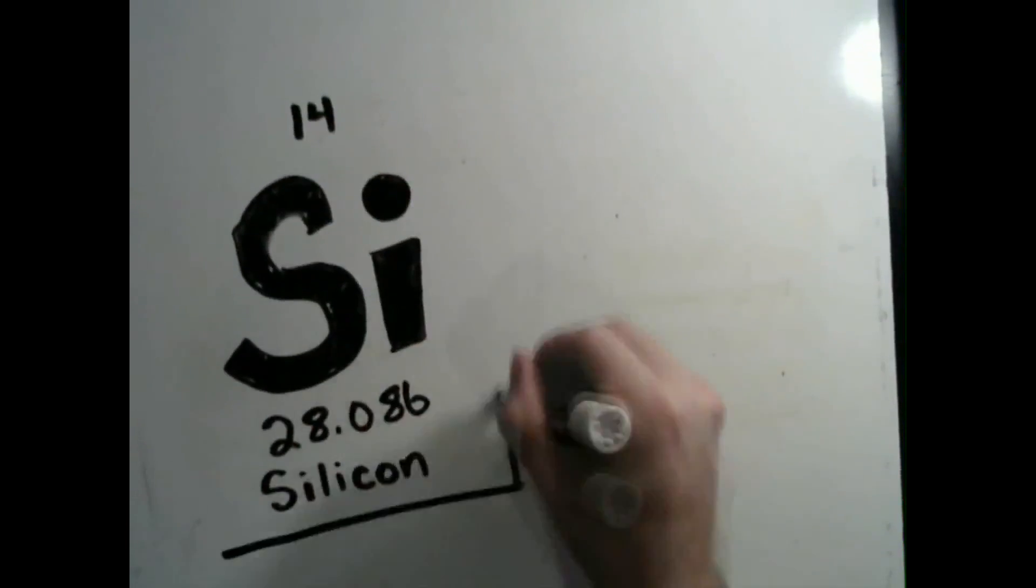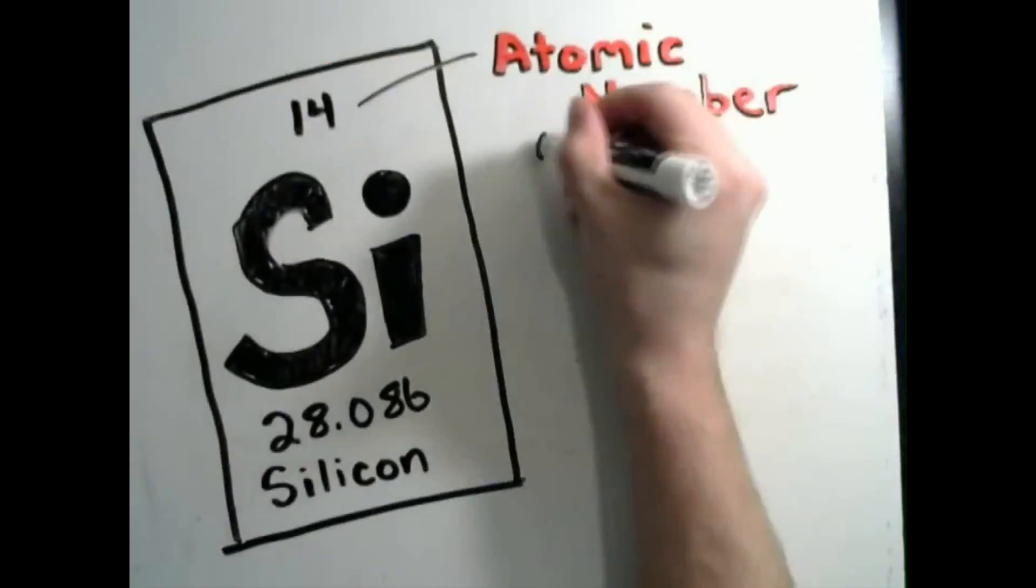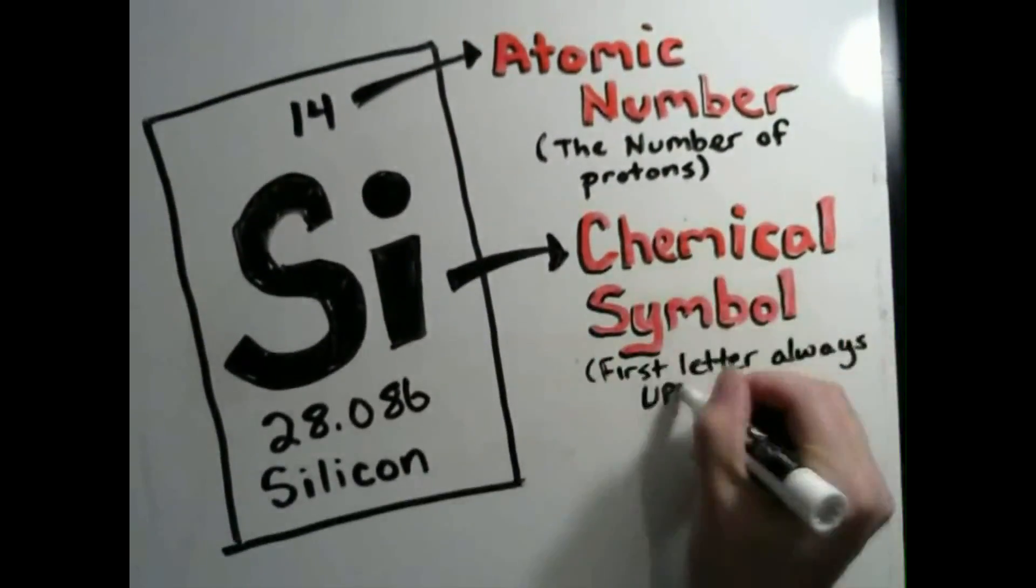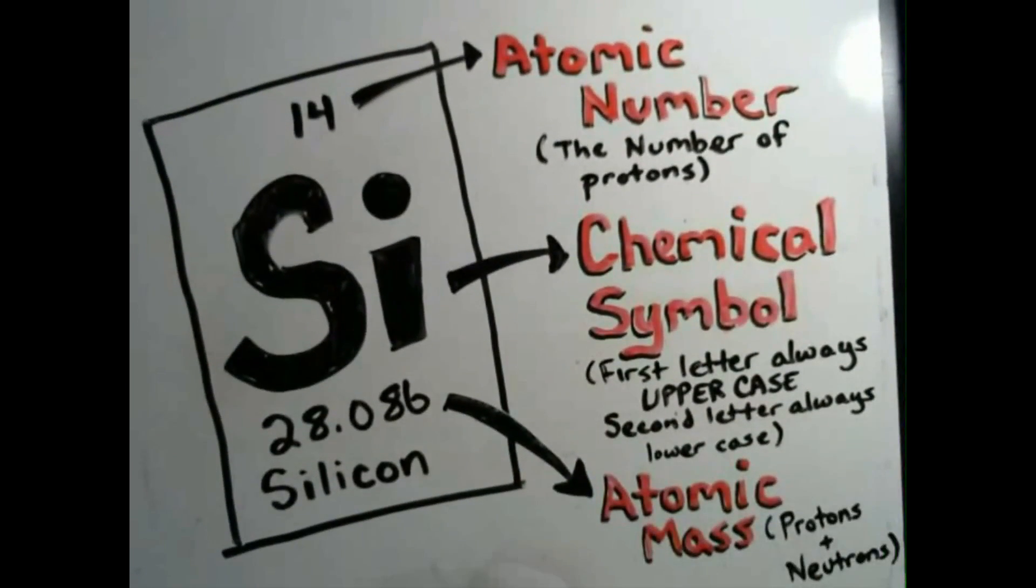And finally, each tile tells us a lot about the element. Like the atomic number, telling us the number of protons per atom. The chemical symbol. The atomic mass, which is the mass of the protons and neutrons. And the element's name.